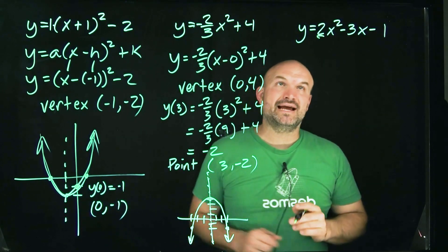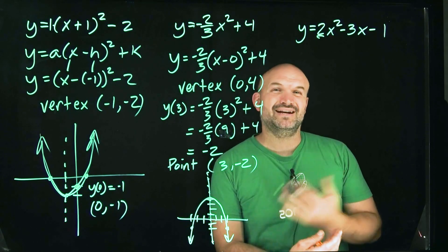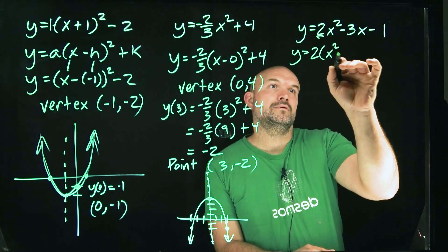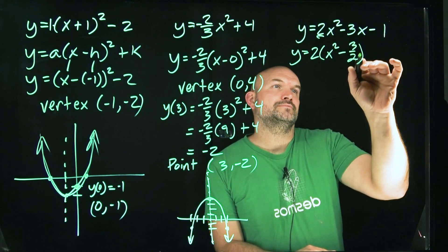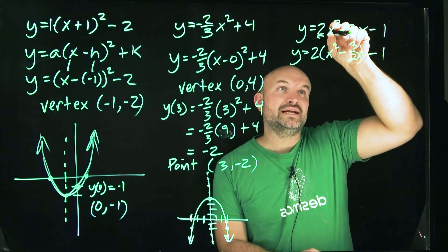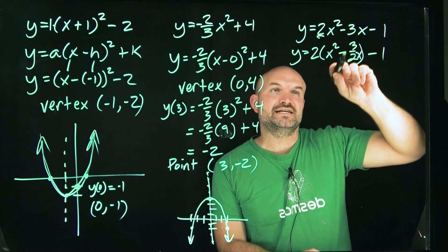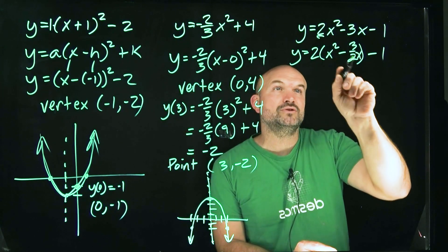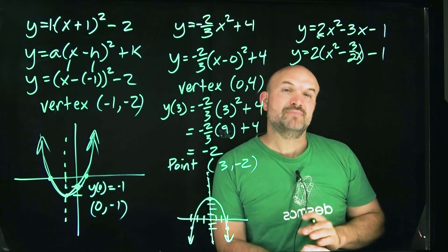So let's go ahead and get started. When I have anything in front of my x squared, I'm going to need to factor that out. So since 2 is not divisible by 3, I had to leave it as a fraction. And again, check my work. Always check your work. If you multiply the 2 back to both of these, I'm still going to get 2x squared minus 3.